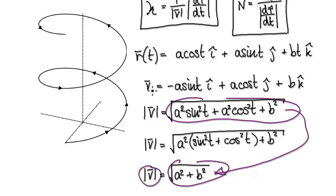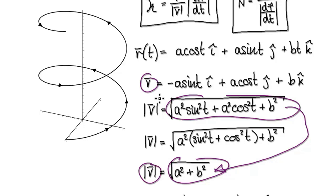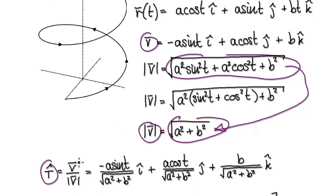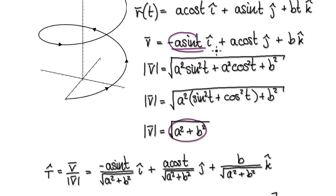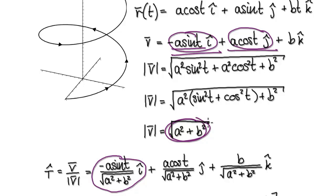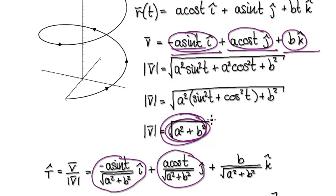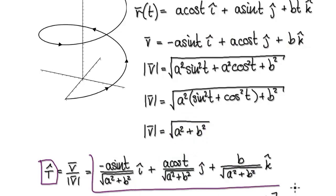We can now obtain our unit tangent. The unit tangent is obtained by taking v and dividing each component by its magnitude. Divide the first component by its magnitude to get this. The middle component divided by its magnitude gives us this. The last component divided by its magnitude gives this. So our unit tangent vector is given by this.